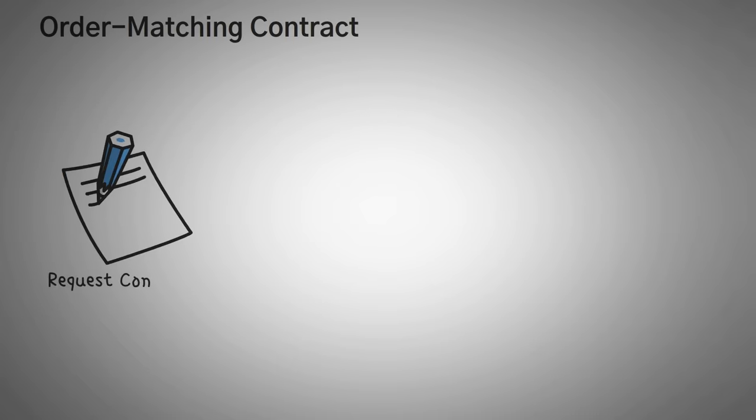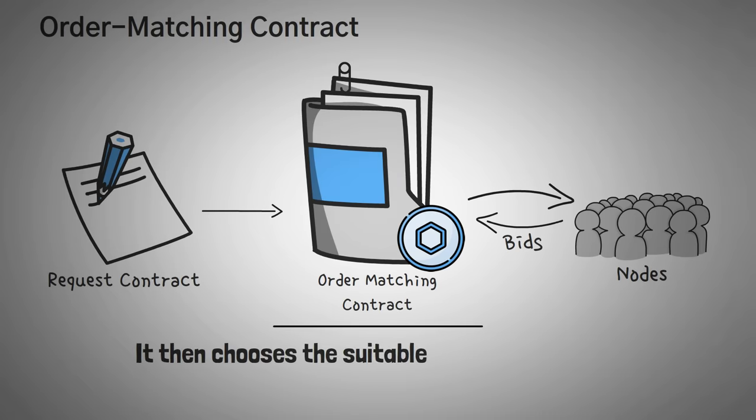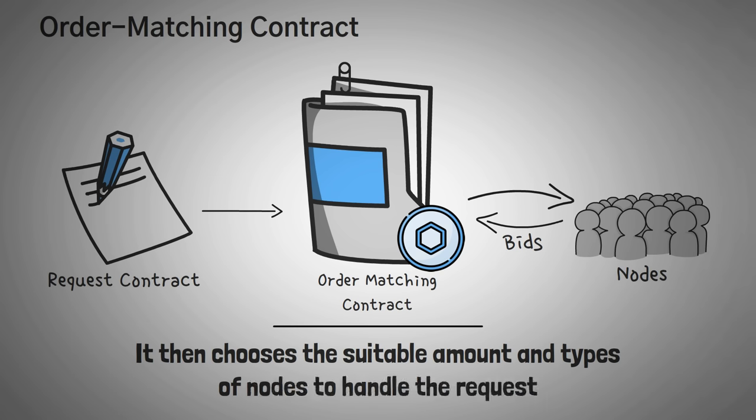The second contract is the order matching contract, which sends the request contract's query, or question, to trustable nodes and then checks their bids. From the list that it gets, it then chooses the suitable amount and types of nodes to handle the question. It should be said somewhere in here, Chainlink converts the request contract's question into another programming language, and then it can actually go into the real world and grab data from the internet.